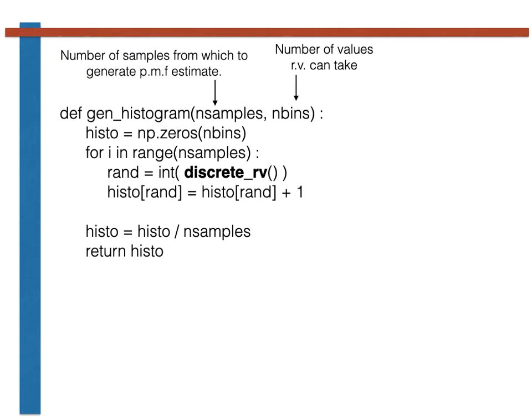As we have seen previously, when we calculate a histogram, we use a numpy array, which in this case is called histo, to count how often each result appears when we generate N samples random variables, as shown here.